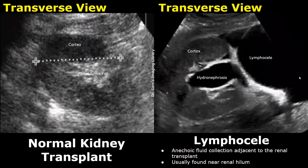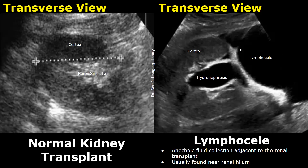A lymphocele is the most common type of fluid collection seen after a renal transplant. It may occur a couple of weeks after the operation. A lymphocele usually appears as an anechoic fluid collection adjacent to the renal transplant, and it is usually found near the renal hilum. Small lymphoceles can be ignored, but large lymphoceles may compress the renal vasculature, which can be concerning.